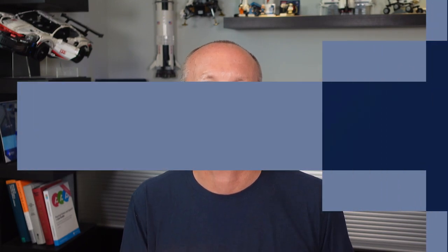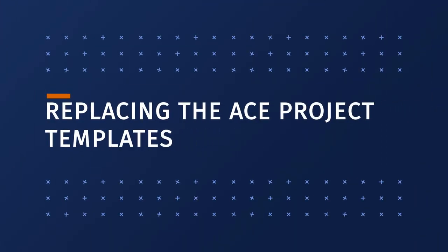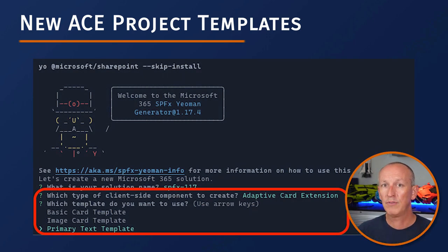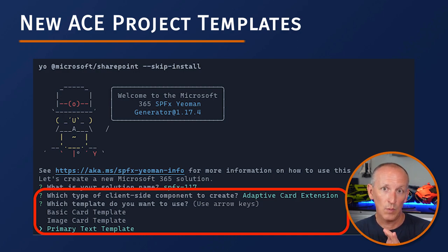Now for the big news. The rest of this release is all related to a very significant update in how we build ACEs. This will likely lead to most of us wanting to rebuild our existing adaptive card extensions, although it's not required — everything is backwards compatible and existing cards will continue to work. In SharePoint Framework 1.18, Microsoft is replacing the project templates used to create new ACEs. Previously we had three options: the basic card, the image card, and the primary text card, now referred to as template-based approaches.